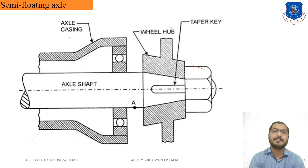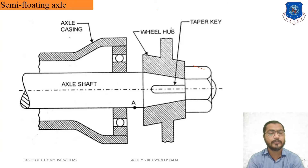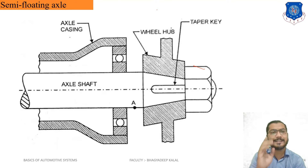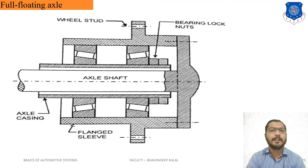In the semi-floating axle, all types of loads which come on the axle — such as torque reactions, side thrust, shearing force, and bending moment — are directly taken by that axle shaft. Semi-floating axles are used in light duty vehicles and cars.